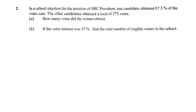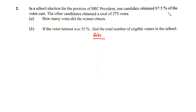Let's continue with question number two. In a school election for the position of SRC president, one candidate obtained 87.5% of the votes cast. The other candidates obtained a total of 275 votes. Part A: How many votes did the winner obtain? Part B: If the voter turnout was 55%, find the total number of eligible voters in the school. Now, in this SRC presidential election, one candidate obtained 87.5% of the votes cast and the other candidates combined obtained a total of 275 votes.